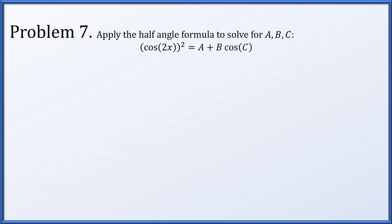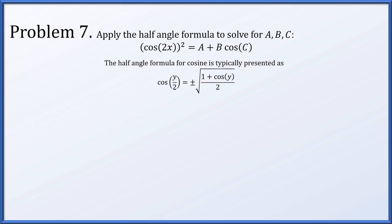Next, let's apply the half angle formula to solve for what a, b, and c should be, assuming that cosine squared of 2x equals a plus b times the cosine of c. The half angle formula for cosine is typically written as: cosine of something over 2 equals plus or minus the square root of 1 plus the cosine of that thing, all over 2. If we square both sides, we get cosine squared of y over 2 equals 1 plus cosine y, all over 2.